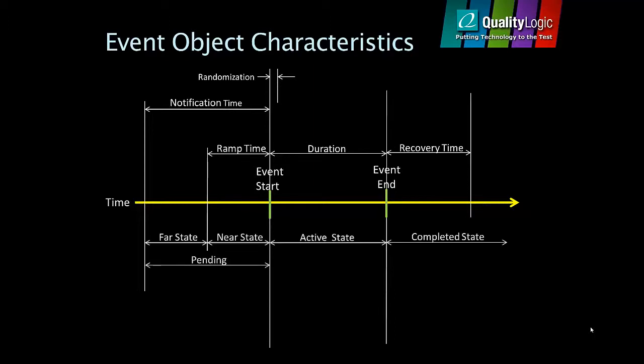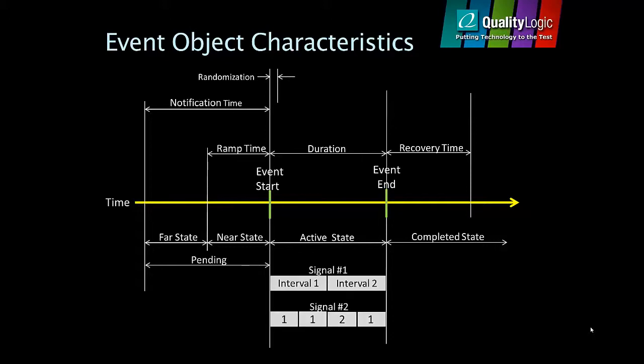Events move through states, starting with a far state, transitioning to the near state if a ramp-up period is defined, and then to the active state while the event is executing. Events can have multiple signals with one or more time intervals. Inside each time interval is an actionable value, shown here as the numbers 1 and 2 in the second signal. These numbers might represent moderate and high load shed respectively for each time interval shown.